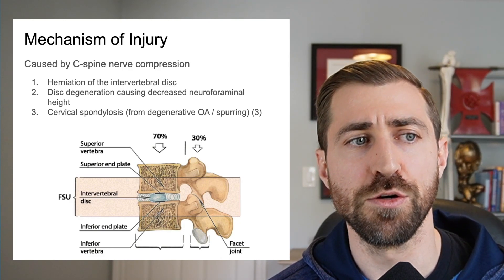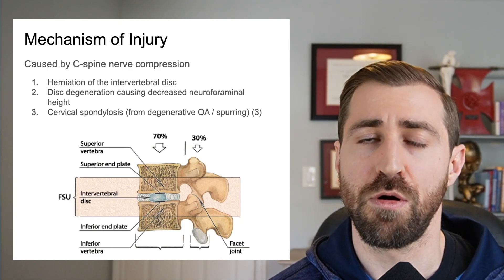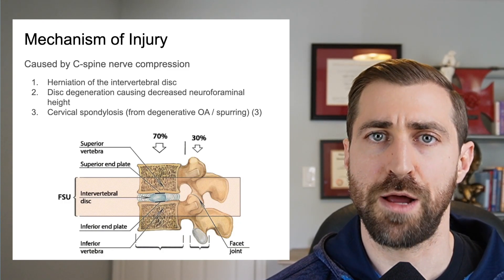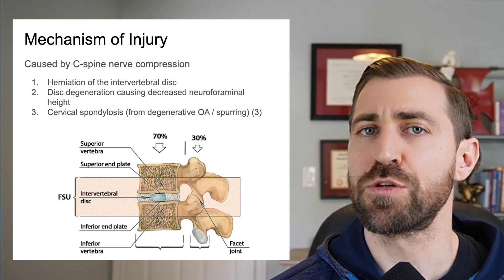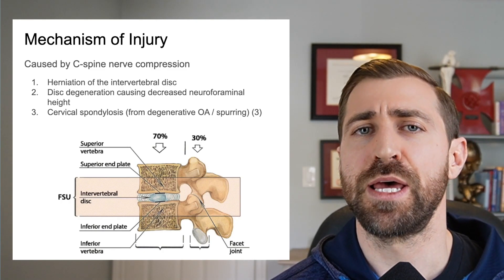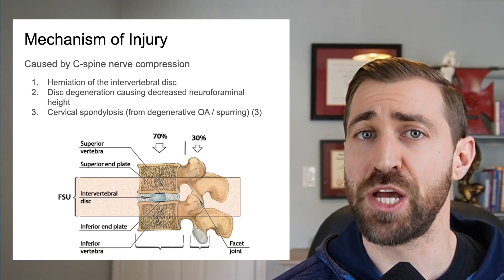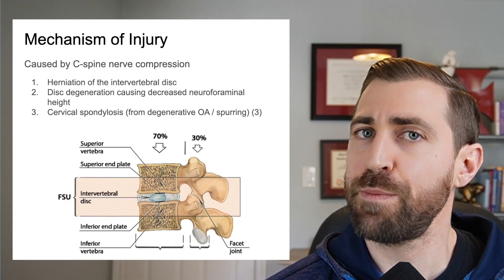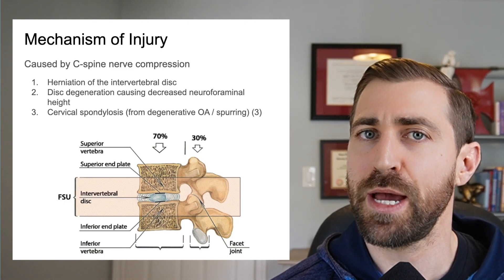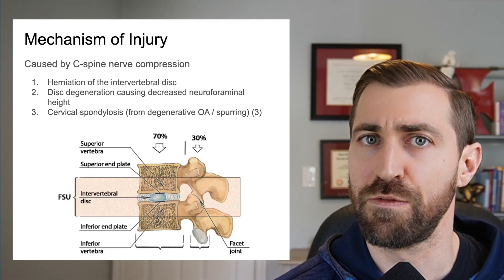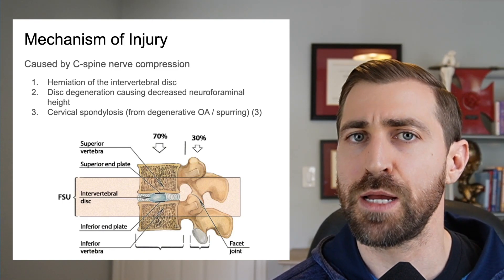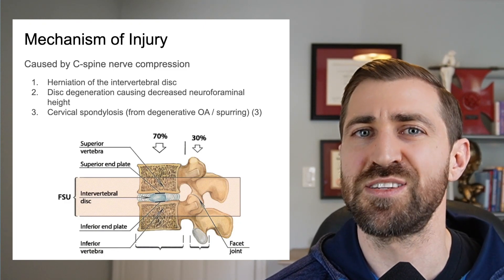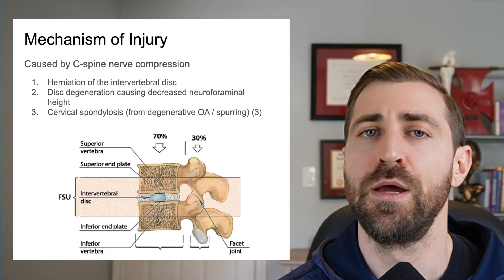And lastly, cervical spondylosis is basically osteoarthritis around the intervertebral foramen, which can also crowd that nerve. One thing to point out is that you can have a lot of these degenerative changes with no symptoms whatsoever. One of the reasons why potentially is because we have a decent amount of space in that intervertebral foramen, and as things degenerate over time, it may crowd the nerve a little bit but the nerve still has plenty of space.